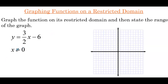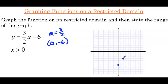If we were to graph this line without a domain restriction, we would identify the slope as 3/2. A point on the line is the y-intercept, which from this equation can be identified as the point (0, -6) because this is in slope-intercept form. Normally we would plot the y-intercept and then start plotting points using the slope 3/2 — up 3 and over 2 boxes — and go in the other direction as well. But we're not going to go past x equals 0, because of the domain restriction x is greater than 0.